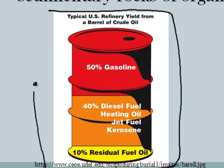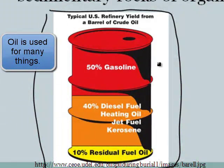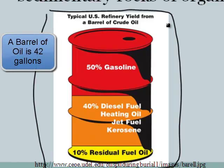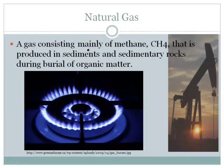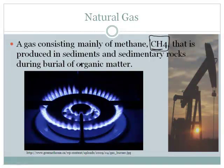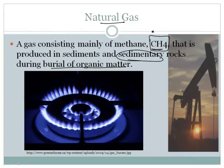This illustration talks about what a barrel of crude oil is used for. The barrel is the unit they use to measure crude oil - I believe it's about 42 gallons. Also involved in this is something called natural gas, which is a gas consisting mainly of methane. Methane is the molecule CH4 - that's carbon connected to four hydrogens - and it is produced in sediments and sedimentary rocks during burial of organic matter.